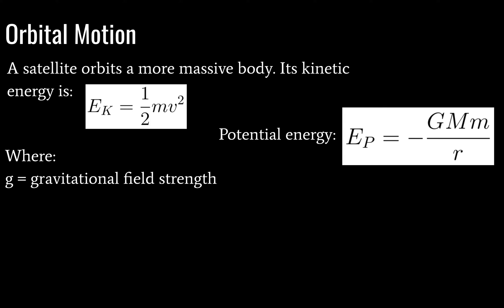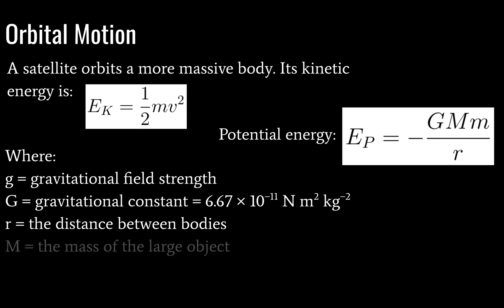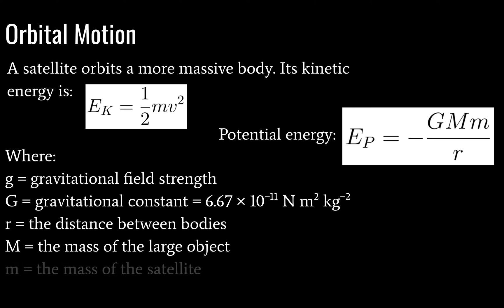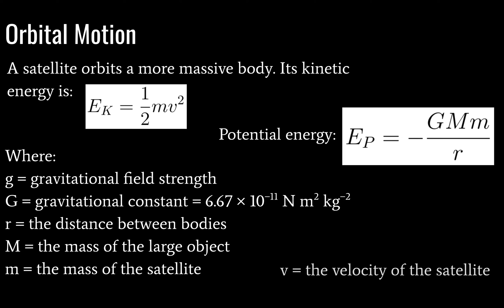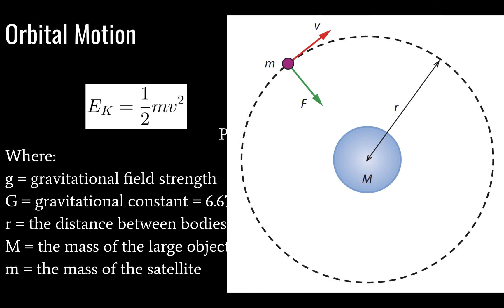To define some variables: G is gravitational field strength, big G is the gravitational constant, R is the distance between bodies, M is the mass of the large object, little m is the mass of the satellite, and V is the velocity of the satellite. Here's a diagram that shows the relationship between all of our variables.